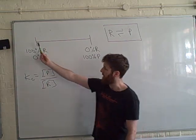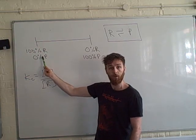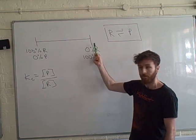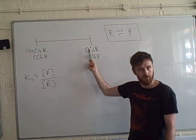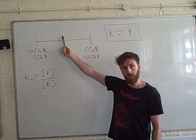So if I just have reactants, we're over here, 100% reactants, 0% products. If we just have products, we're over here, 100% products, 0% reactants. If we have a 50-50 mix, we'll be right in the middle there.